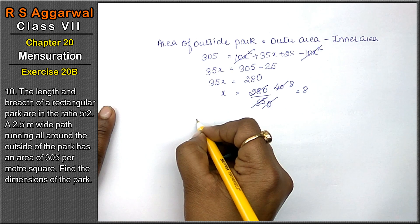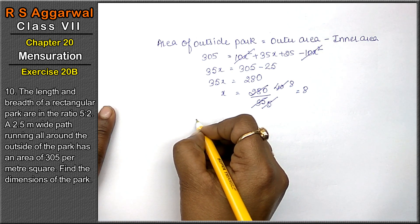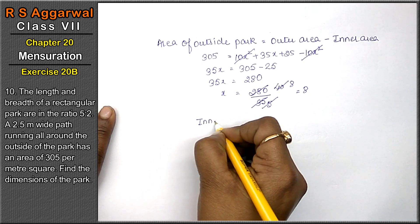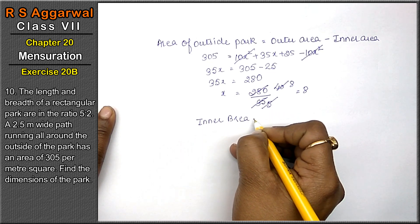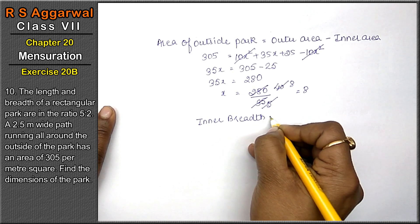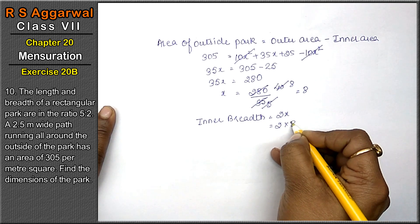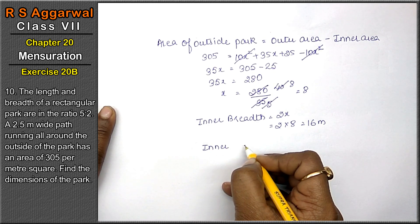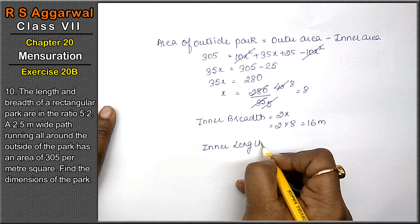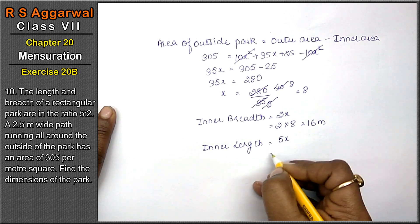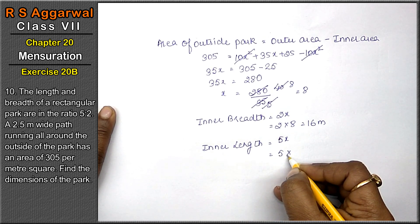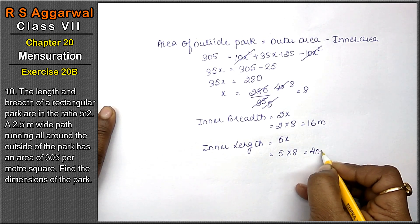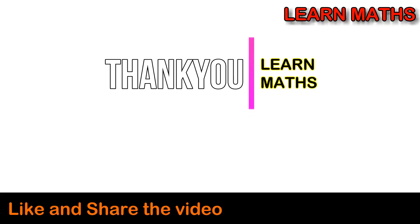Now we find the inner dimensions of the park. Inner breadth = 2x = 2 × 8 = 16 meters. Inner length = 5x = 5 × 8 = 40 meters. That is the answer. Thank you — if you understood the step-by-step solution, please subscribe my channel on Maths and share it with your friends.